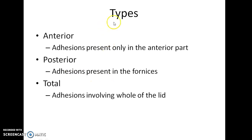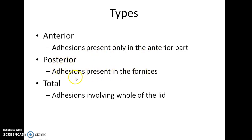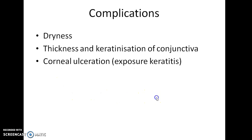The three types of symblepharon are anterior, posterior, and total. In anterior symblepharon, adhesions are present only in the anterior part. In posterior symblepharon, adhesions are present in the fornices. And in total symblepharon, adhesions are present involving the whole of the lid.